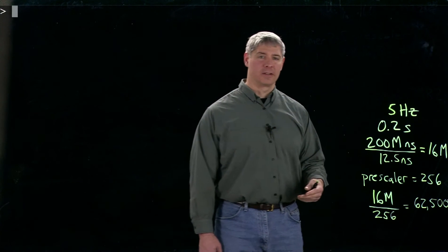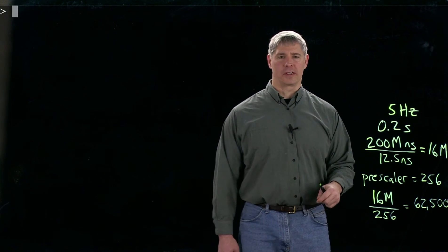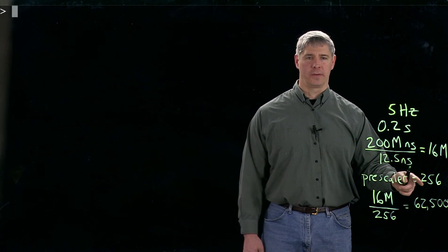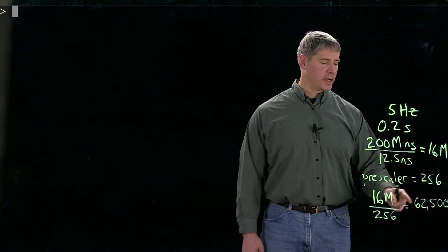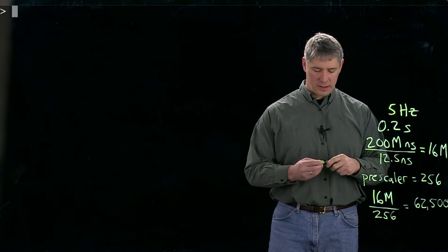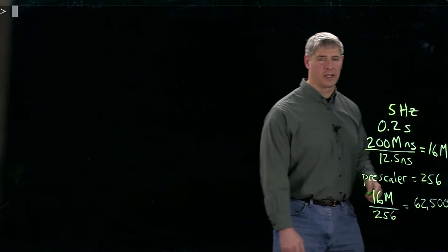counter can only count up to about 65,000, so this is right near the limit. So that means we're going to use timer one in this example. We're going to set up timer one to have a pre-scaler of 256 and then a period register to have a value so that it rolls over after every 62,500 counts of the counter. So let's take a look at that program.